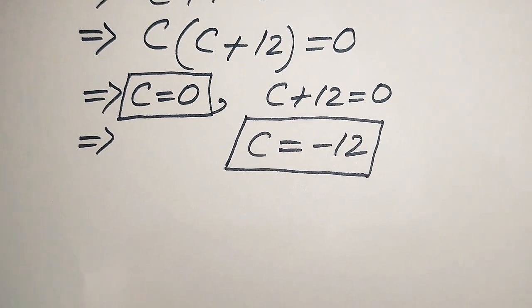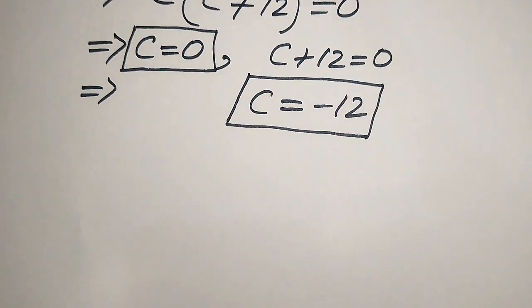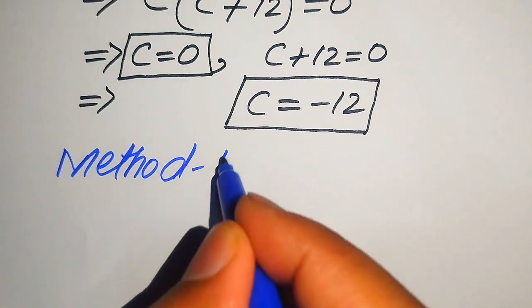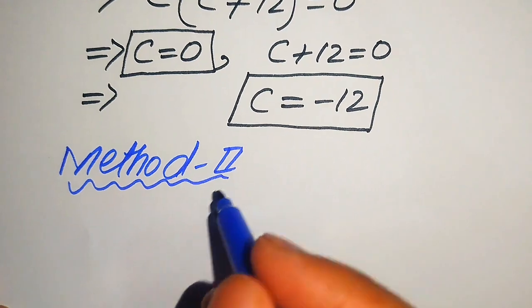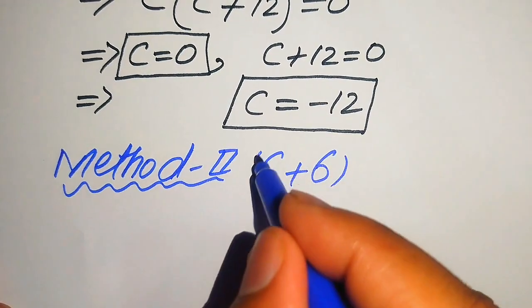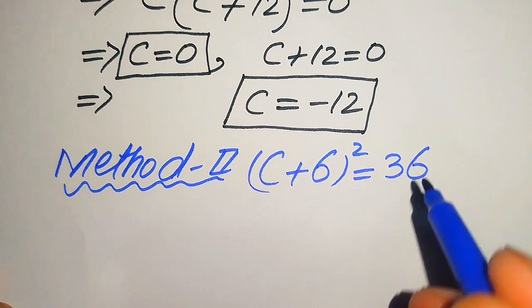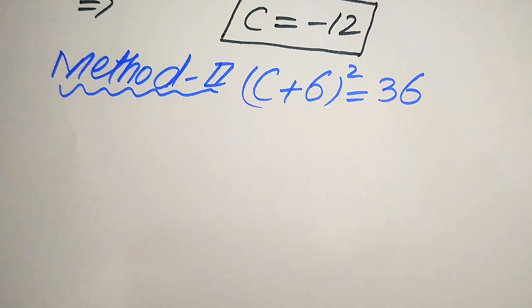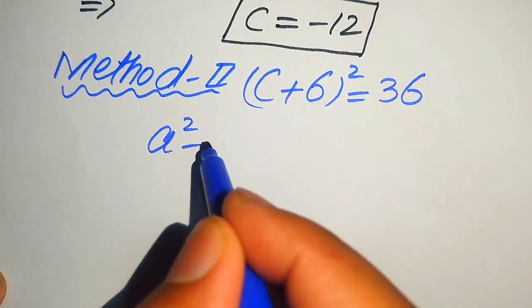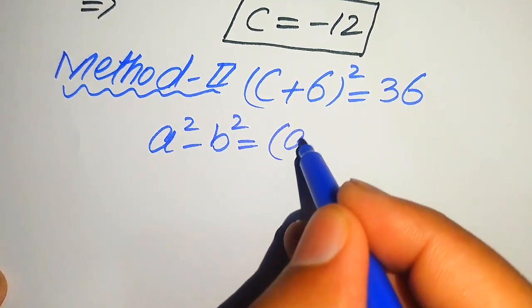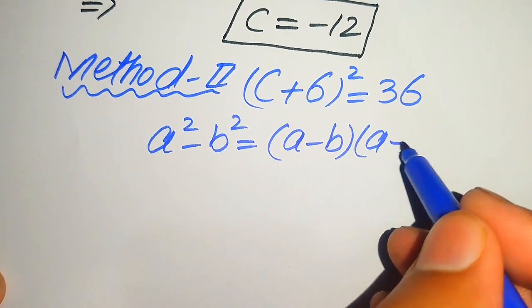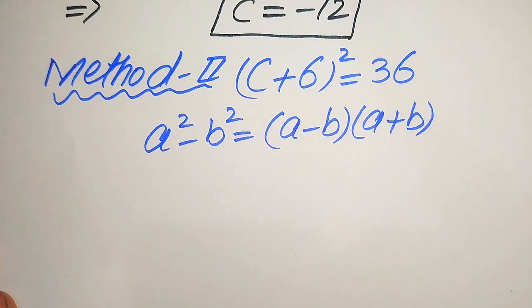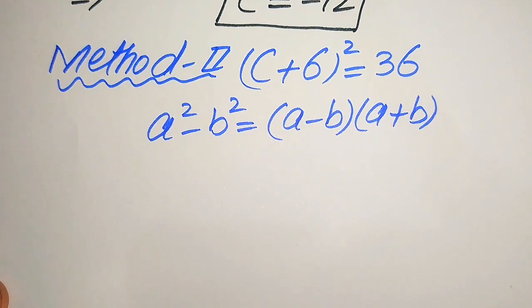Now we move forward and solve this problem using the second method. We copy down the given equation: (c + 6)² = 36. In the second method we use the algebraic identity a² − b² = (a − b)(a + b), which we will apply to the given equation.